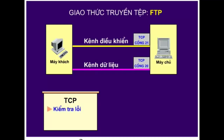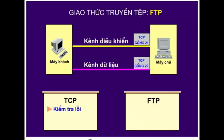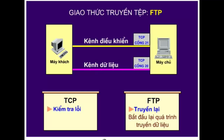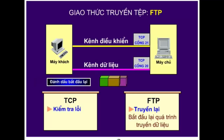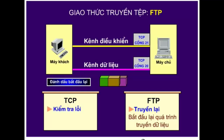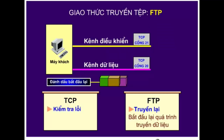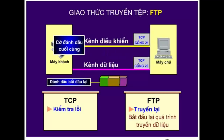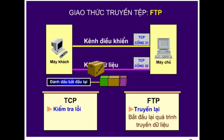FTP không thực hiện kiểm tra lỗi, tuy nhiên nó có chức năng bắt đầu lại quá trình truyền dữ liệu đã bị ngắt. Các cờ đánh dấu bắt đầu lại được lưu trong tiêu đề của mỗi gói riêng biệt. Nếu máy khách cố gắng khôi phục lại quá trình truyền dữ liệu bằng cách gửi lệnh bắt đầu lại, thì máy chủ gửi trả lời cờ đánh dấu cuối cùng. Cả hai phía so sánh các cờ đánh dấu và sau đó máy khách bắt đầu lại quá trình truyền.